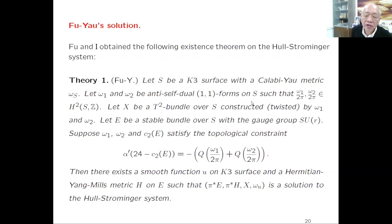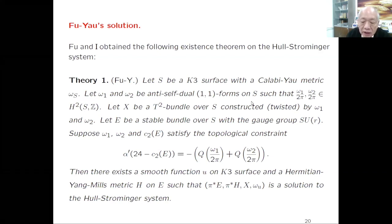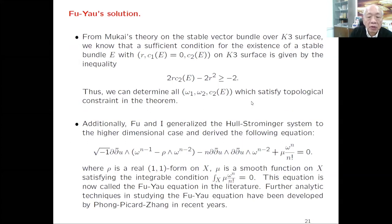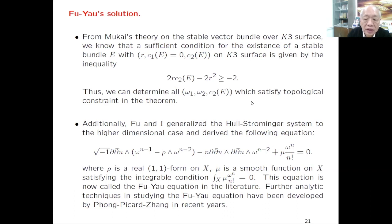The metric comes from the Calabi-Yau metric on K3 by conformal deformation, together with the connection theta on the line bundle. All together we solve the equations. This is the first time we can find a solution to the Strominger system on an intrinsically non-Kähler manifold. This whole result can be generalized to higher dimensions, though complex 3-dimensions is still the most interesting case in relation to string theory. This problem was then studied further by Fong, Picard, and Chen in recent years.